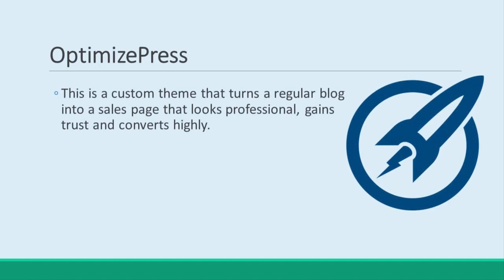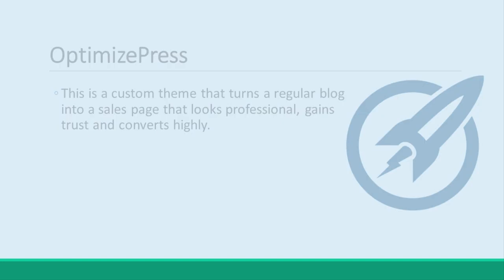OptimizePress lets you add a theme to your WordPress site that is designed for selling. It turns a regular blog into a sales page that looks professional, gains trust, and converts highly.